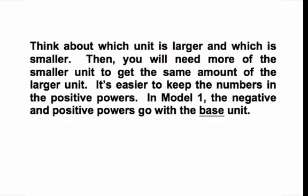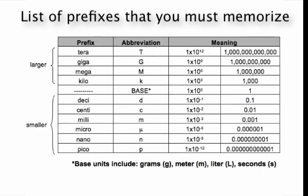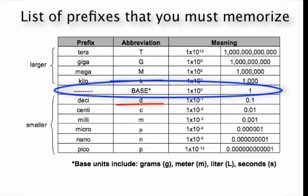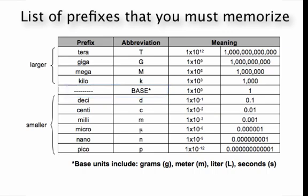So how would you use these questions? Let's do an example: how many grams are there in 58 centigrams? Looking at your prefix page, grams is the base unit and centi is the prefix. Asking the three questions — which unit is larger? Grams is larger than centigrams. What do you need more of? Since grams is larger, you need more of the smaller unit, which is centi.